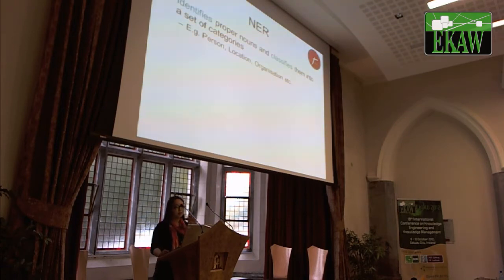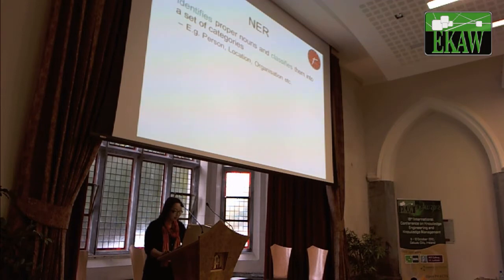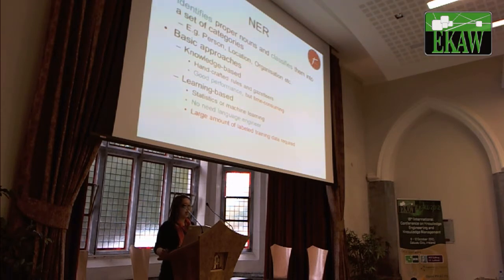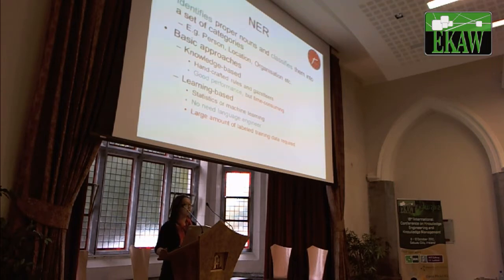NER identifies proper nouns and classifies them into a set of categories such as person, location, and organization, and has been approached in two basic ways. One is the knowledge-based approach, which uses explicit resources such as rules or gazetteers — usually handcrafted rules — and therefore gives more accuracy, but consumes high time and has a high cost as well.